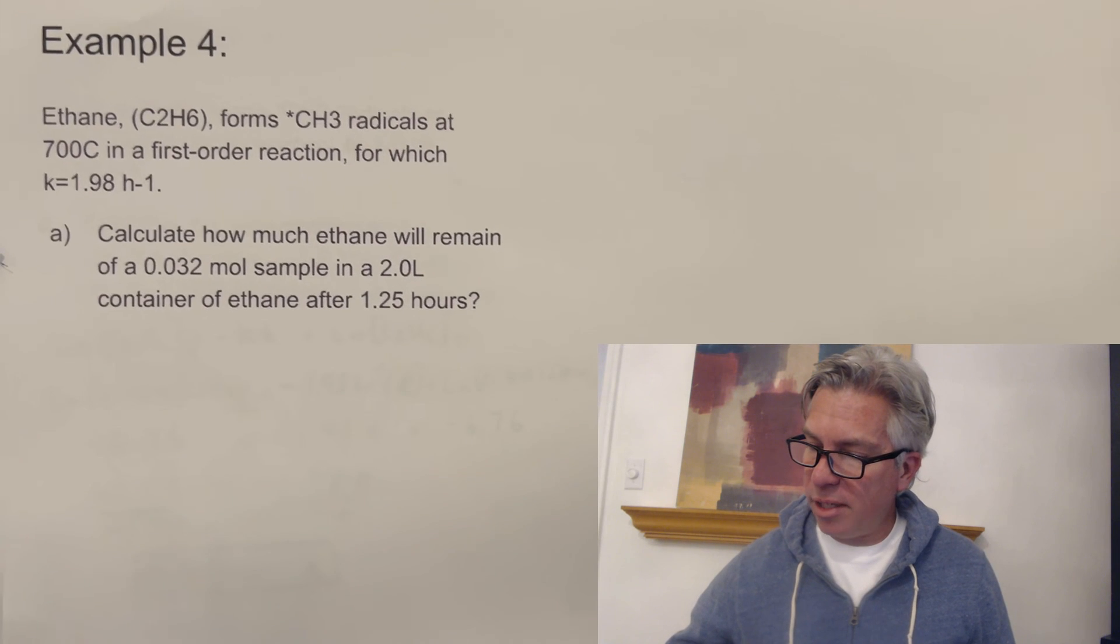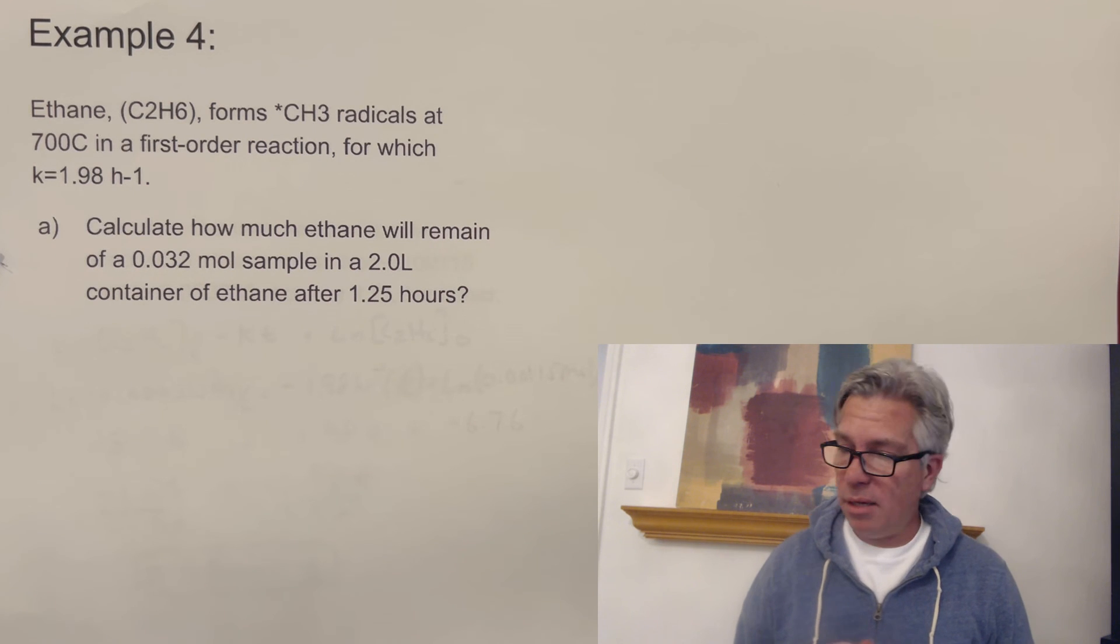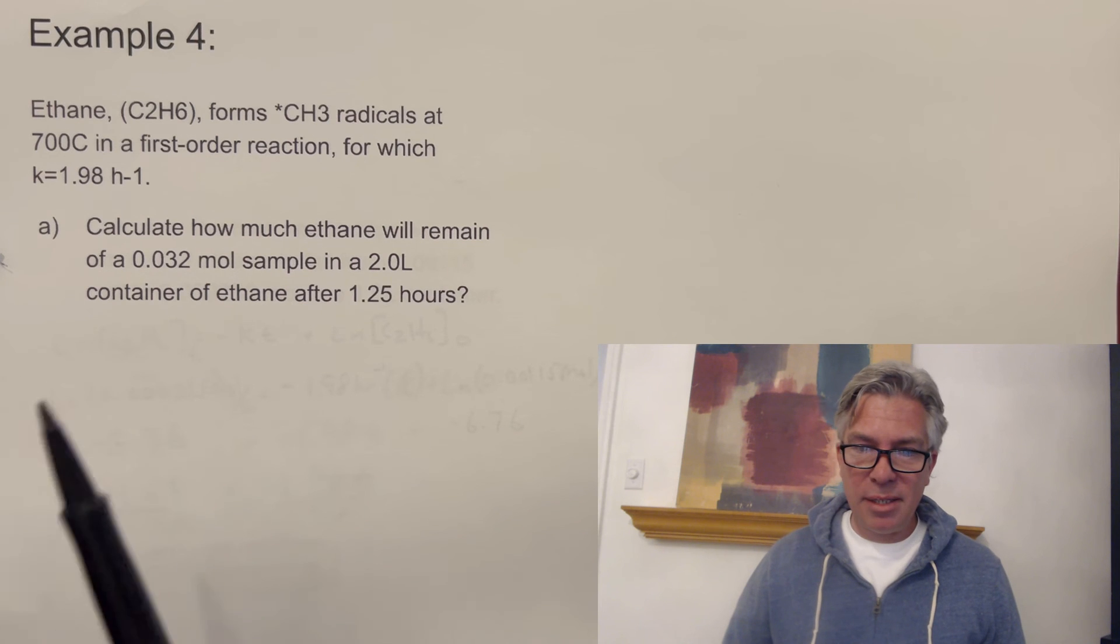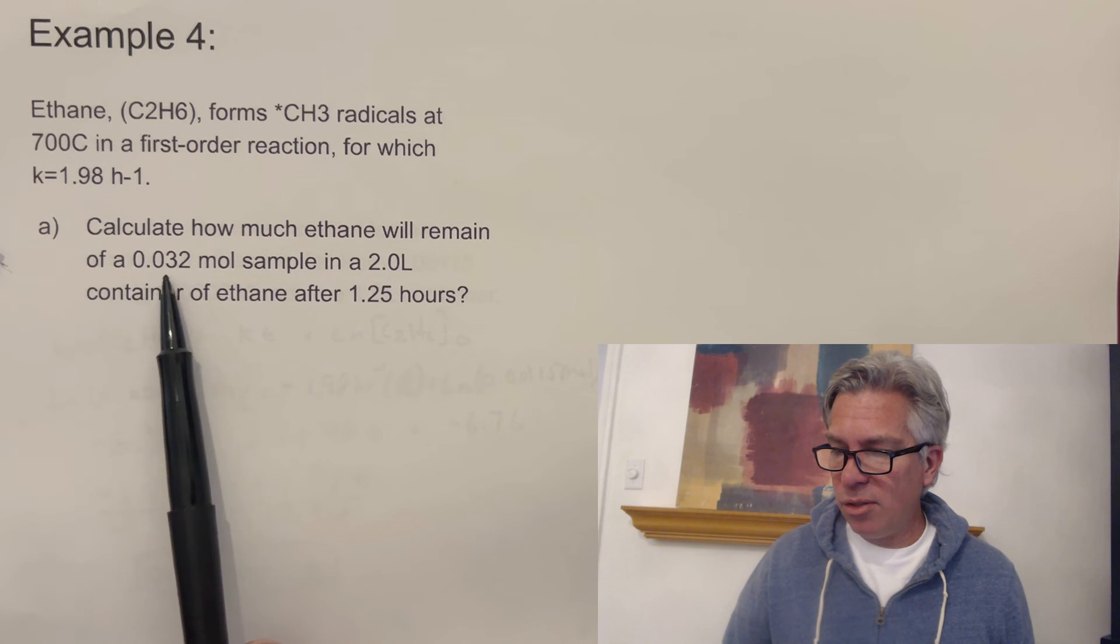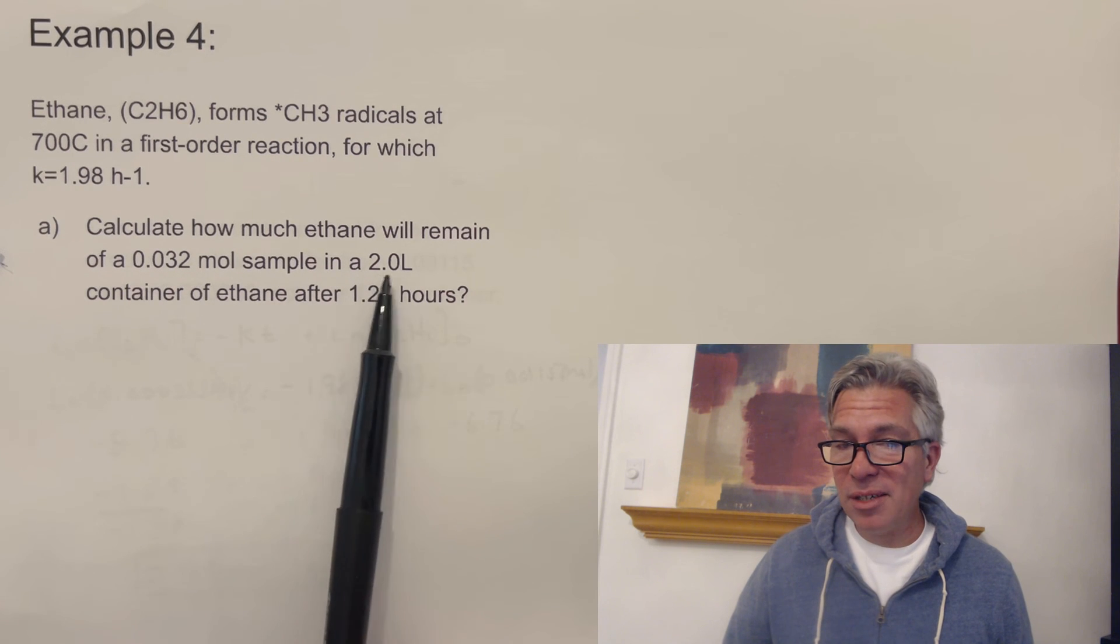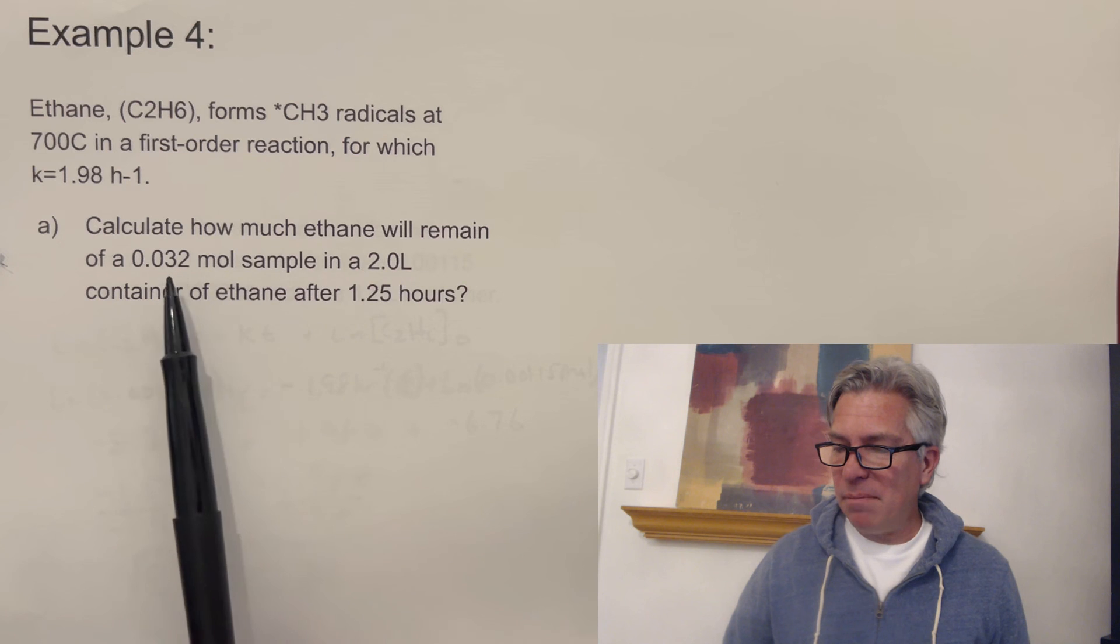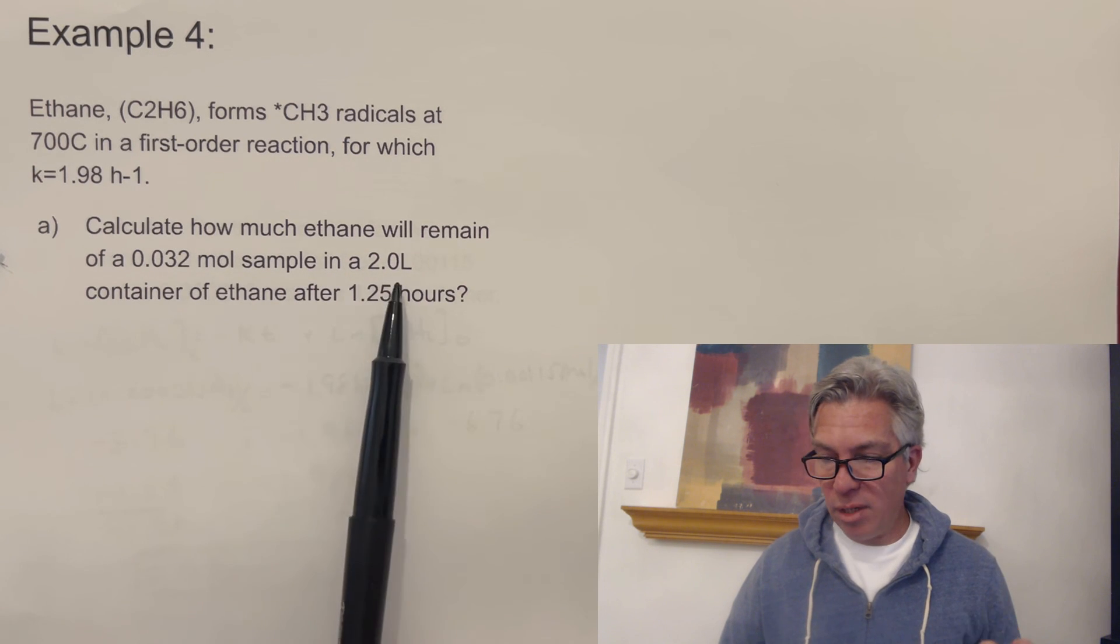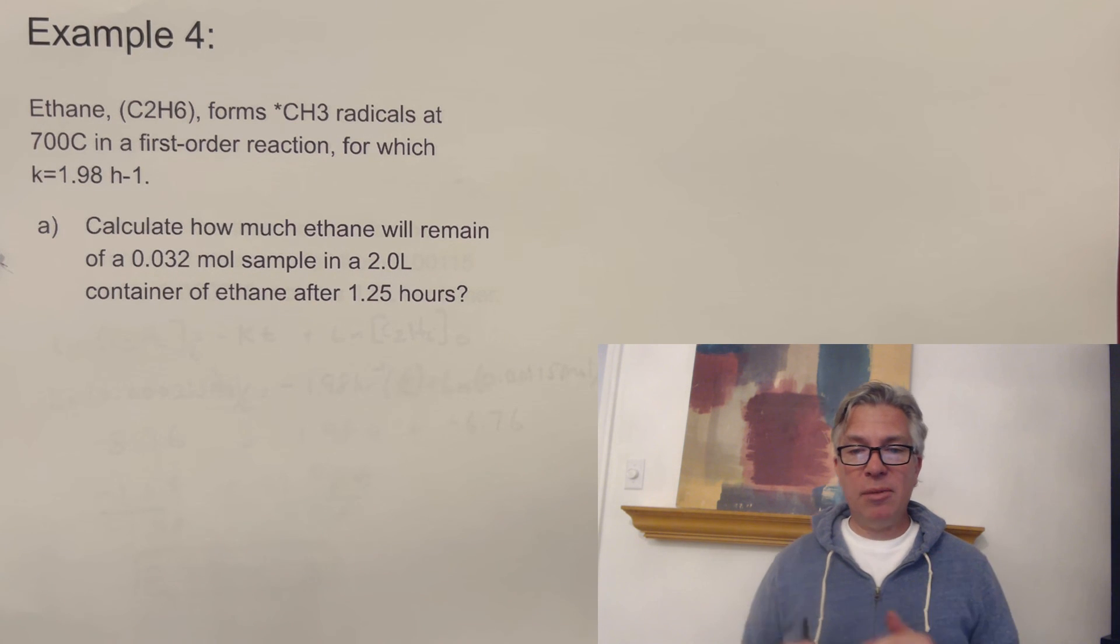Pause the video at any time if you need to copy anything down. Here's the one for you. Pause the video. Check this out. Same reaction. I kept the reaction the same and the same rate constant. So we don't have to do a new one, but take a moment and see if you can calculate how much ethane will remain of a 0.032 mole sample in a two liter container. So a little extra step here just to be tricky. Maybe divide those and see if you can get an actual molarity. And then the time is 1.25 hours. Pause the video and see if you can calculate the amount remaining.